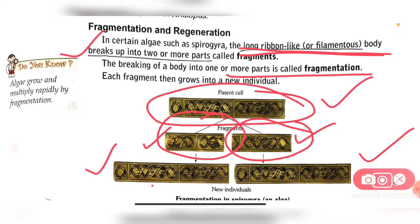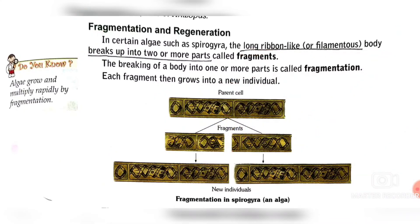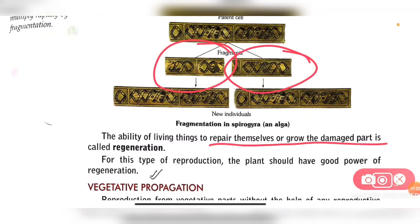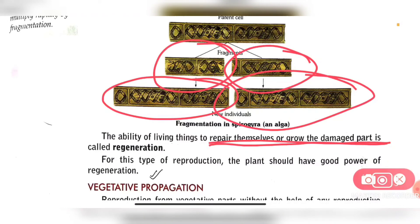In the fragmentation and regeneration process, the parent cell breaks into two or more parts — this is called fragmentation. Each fragment then grows into a new individual. The fragmented or broken parts repair themselves and grow into the complete organism. For this type of regeneration, the plant should have good power of regeneration.